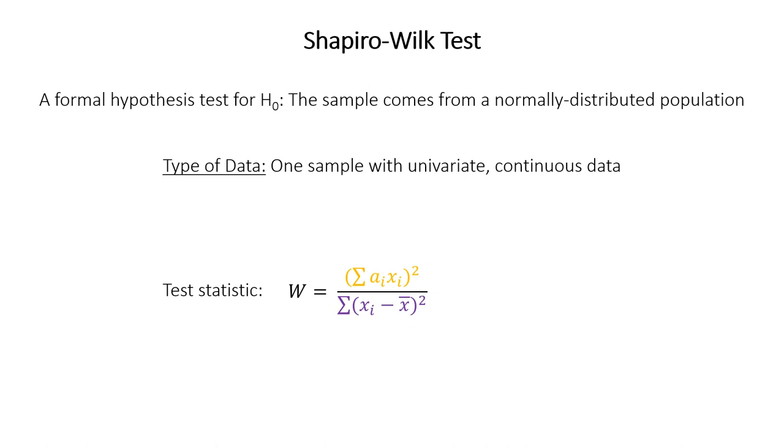Right, but what if you specifically want to test whether your data differs significantly from a normal distribution? Well, the Shapiro-Wilk test is a formal way of doing that. It has the null hypothesis that your sample comes from a normally distributed population. Now, because the normal distribution is a continuous probability distribution, you can only use this test on univariate continuous data. So one variable, and it has to compare one sample to an expectation of a normal distribution.